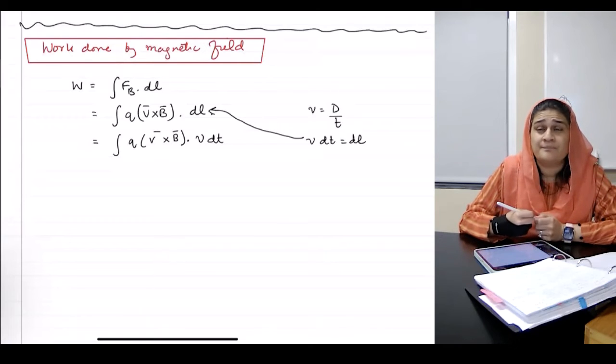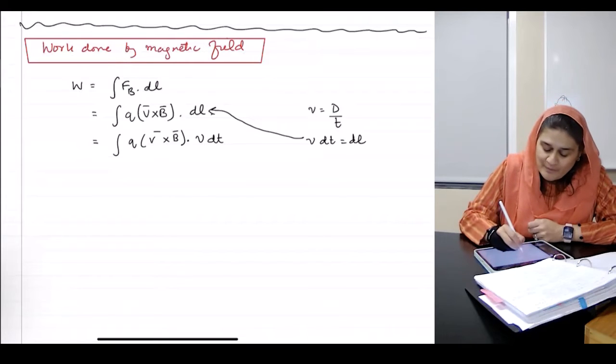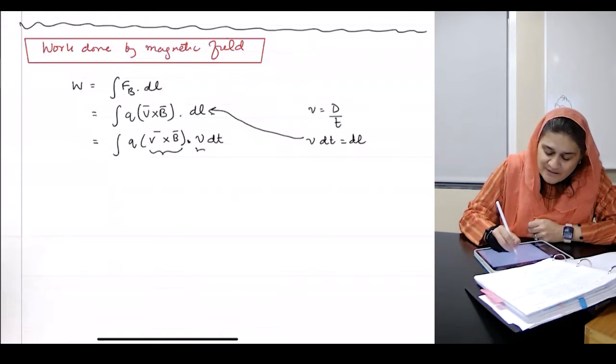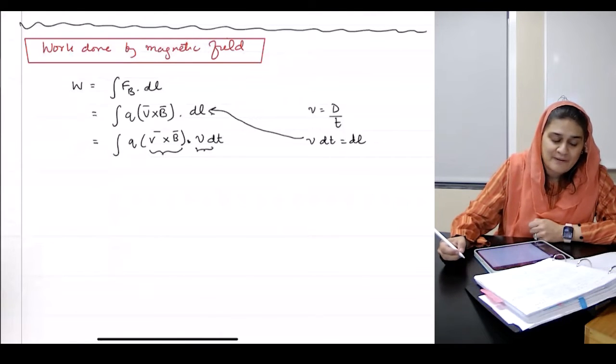It's a dot product, right? Between V and V cross B dot with V. What's the angle between them?